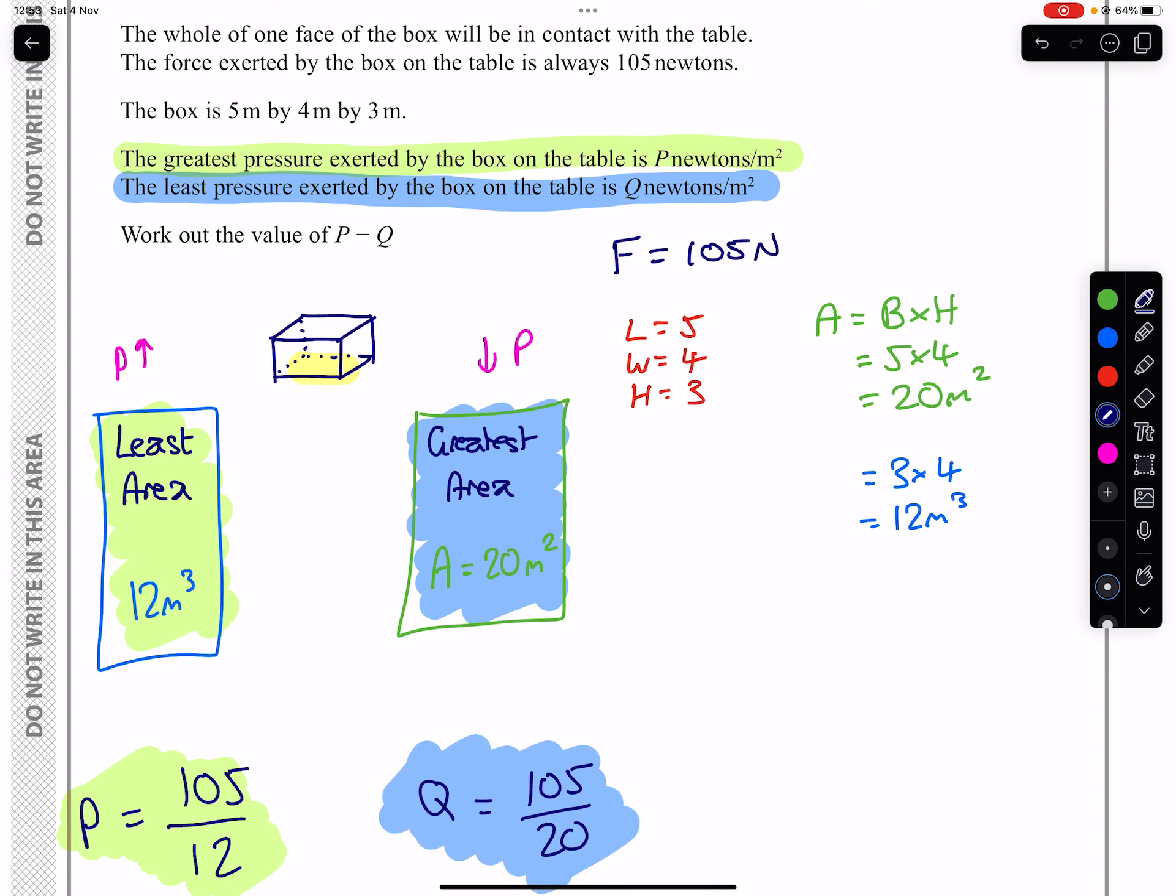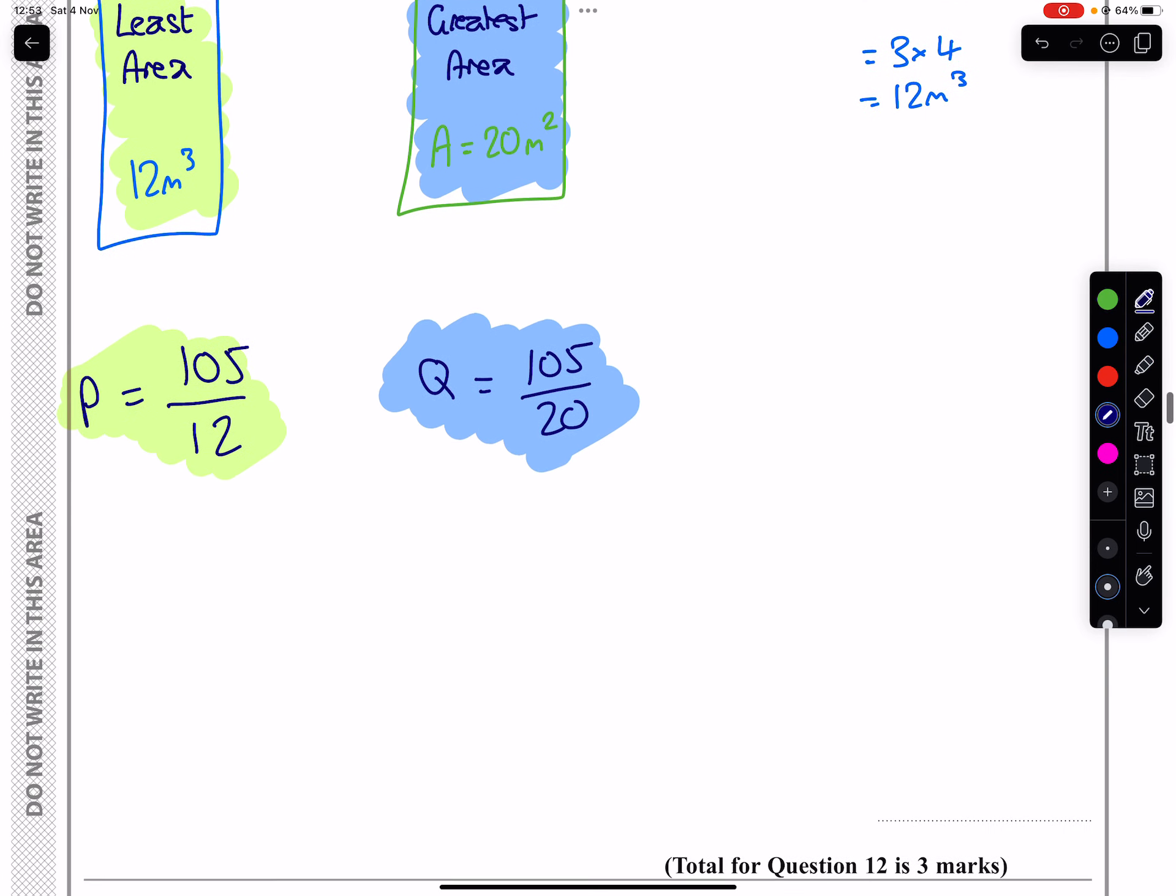Now we can figure out the values of P and Q by doing the necessary divisions. Our P will be 105 divided by 12, which is going to give us 8.75. And our value of Q is 105 divided by 20, which is 5.25.